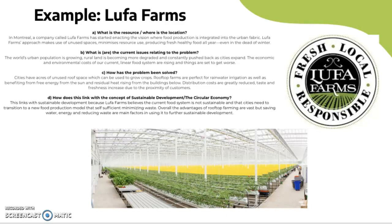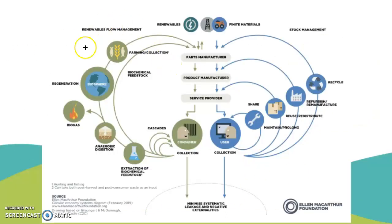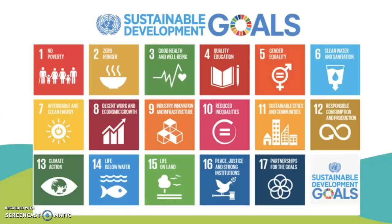Distribution costs are greatly reduced and taste and freshness increase due to the proximity of customers. This links with the SDGs because Lufa Farms believes the current food system is not sustainable and that cities need to transition to a new food production model that is self-sufficient and minimizes waste. The advantages of rooftop farming are vast, with saving energy, water, and reducing waste being the main factors. This links to SDGs such as affordable and clean energy and responsible consumption and production.